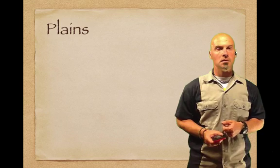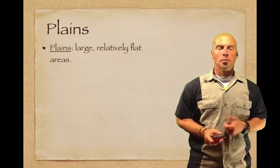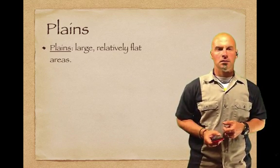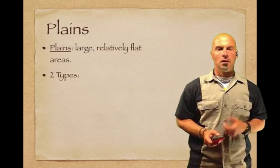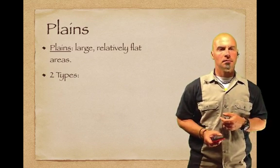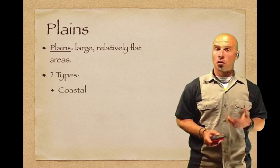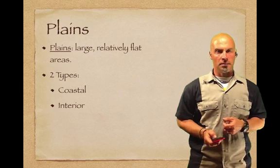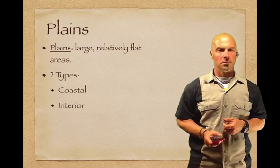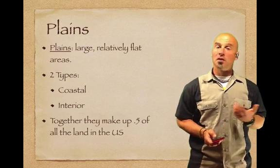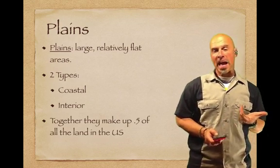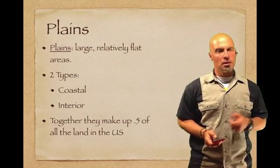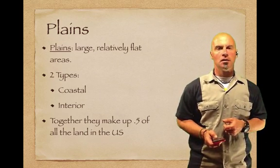First, the plains. Plains are large, relatively flat areas. There are two types of plains: the coastal plain and the interior plain. Together they make up about half of all the land in the U.S. — a large chunk of real estate.